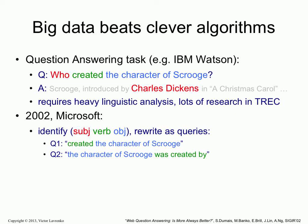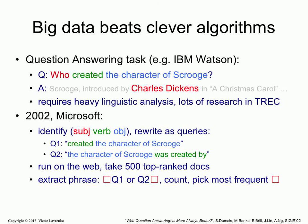A simple pattern for this would be: created the character of Scrooge, and the character of Scrooge was created by. All you're doing is taking the verb part and the object part and moving them around in a couple of ways — enriching the verb with some linguistic forms that tend to occur in language. But this is really, really simple rewriting. These become queries — query one and query two — and they submit these exact quoted strings to the web, running them on the Bing index.